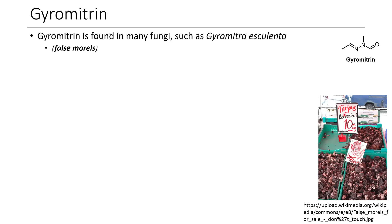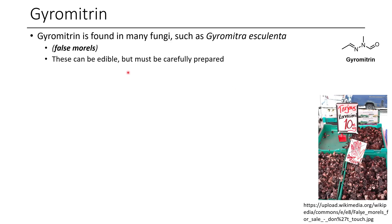The first one we're going to talk about is gyromitrin. Gyromitrin is this interesting looking compound — you can see it's both an imine and a hydrazine, and it also has a formamide group in it. Interestingly, these mushrooms are edible but they have to be prepared carefully.